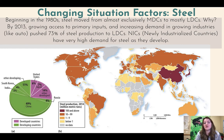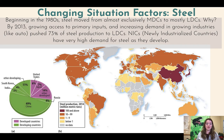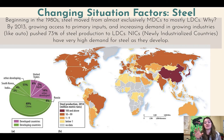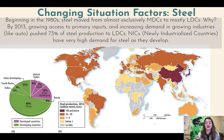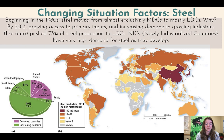Beginning in the 1980s, steel moved from almost exclusively MDCs to mostly LDCs. By 2013, access to growing primary inputs and increasing demand from growing industries like the automobile industry pushed 73% of steel production to LDCs. NICs — newly industrialized countries — have very high demand for steel as they develop because they want to build more, and steel is really strong and durable. Today the major steel producers are China and also Japan, whereas the United States used to be the major producer.